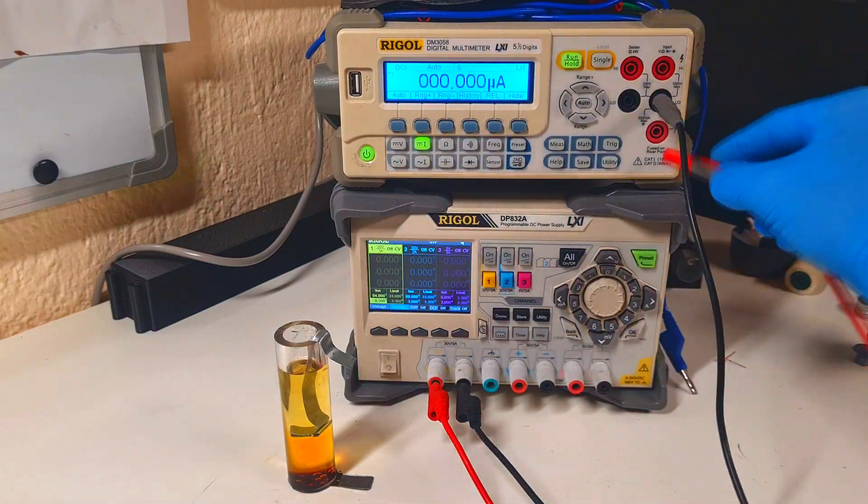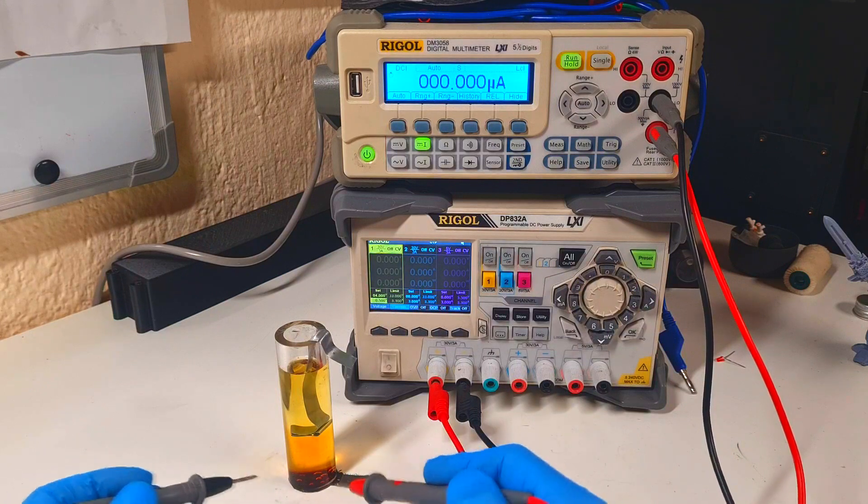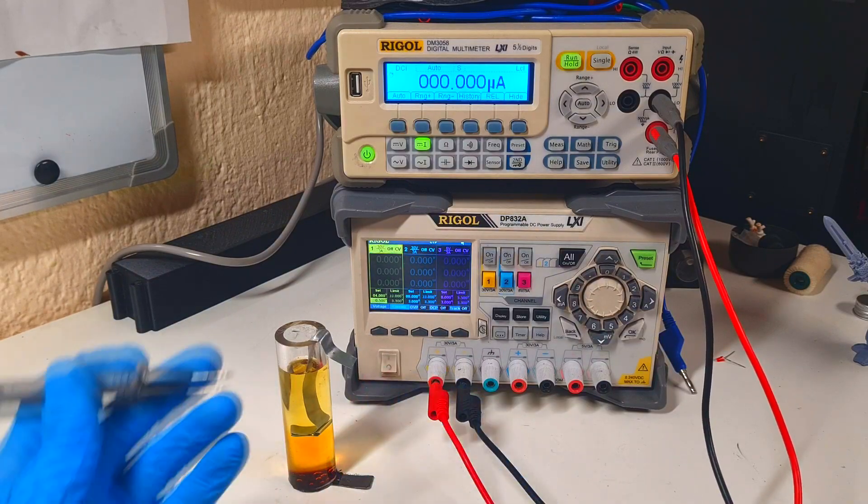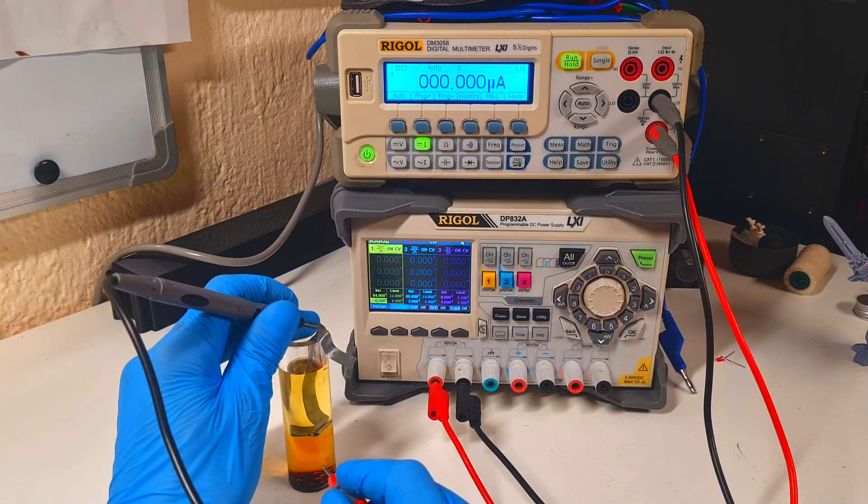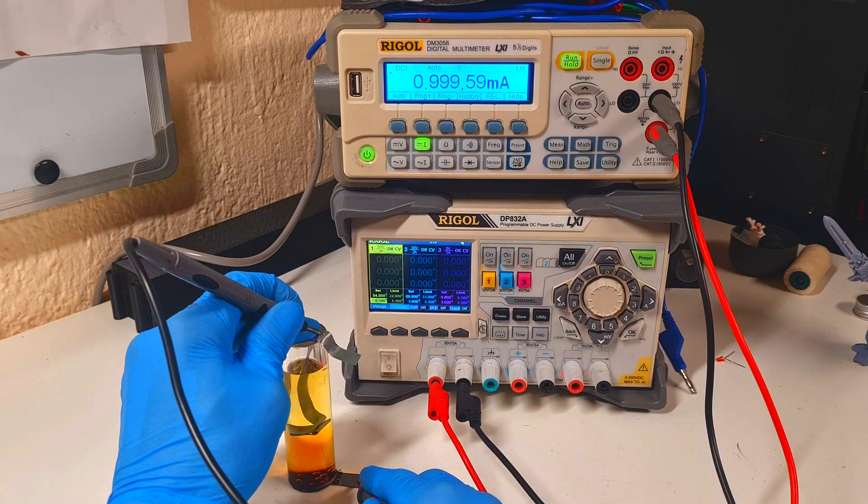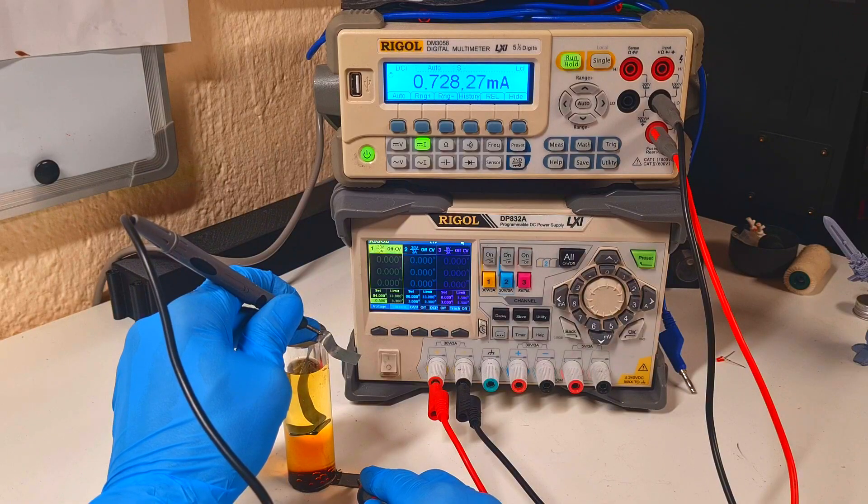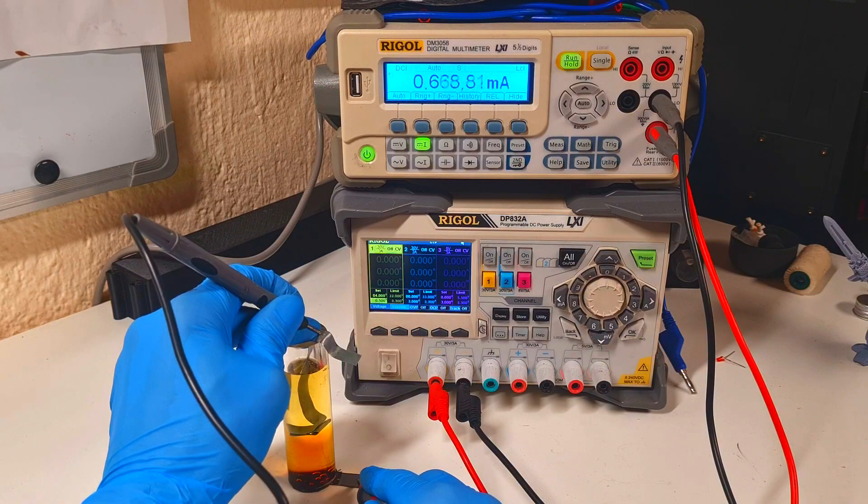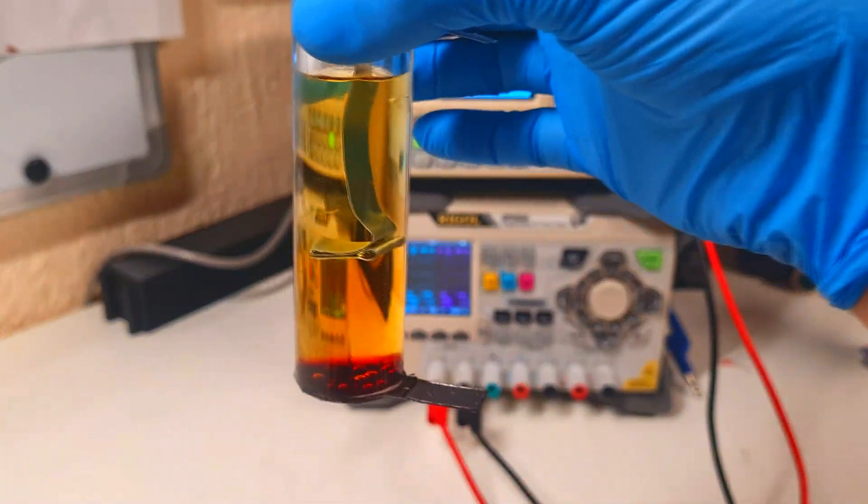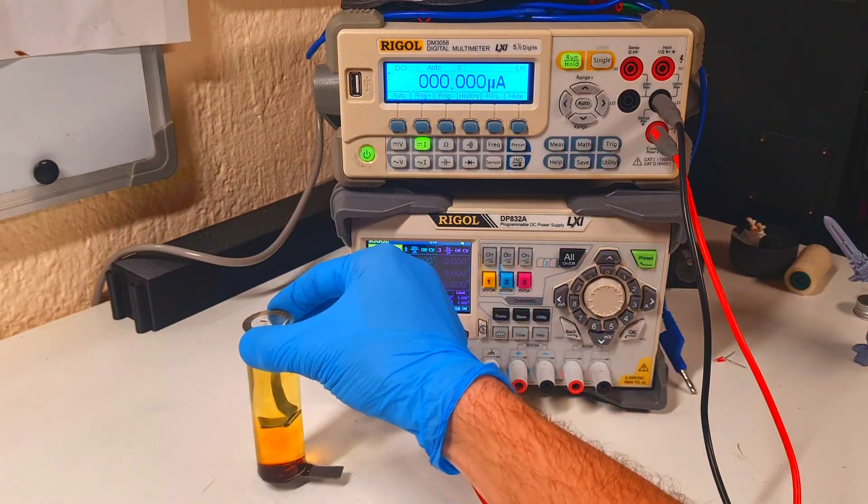Now the current. Because we have here some really limited surface area and we also have this distance between the electrodes, for this reason I don't expect that the current will be really high. Here I get one milliamp, 0.7 milliamps. Yeah so the current is not great but for the first try, this test cell is okay because we need to start with something that we can improve later.